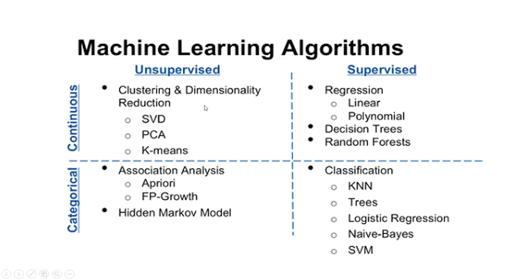Now let's look at machine learning algorithms. We are focusing on supervised learning, specifically classification. In classification, we have different algorithms: KNN (K-Nearest Neighbors), decision trees, logistic regression — which, despite its name, is actually used for classification problems, not regression — Naive Bayes, and Support Vector Machines (SVMs).